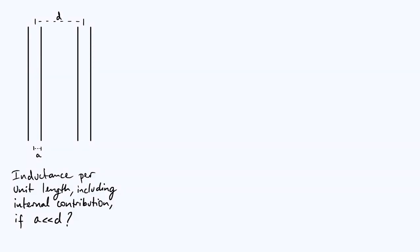Hi everyone. In this video we're going to find an expression for the inductance per unit length of a pair of parallel wires. As shown in the diagram at the top left, we've got two identical wires, each with a radius of A and a circular cross-section. The centers of the wires are separated by a distance of D, and we're going to assume throughout that A is much less than D.